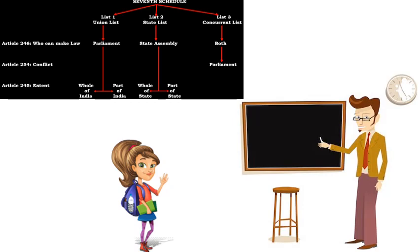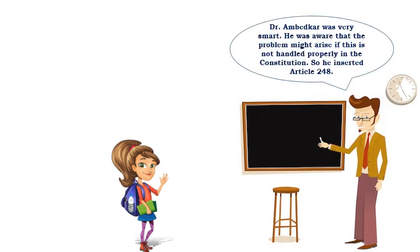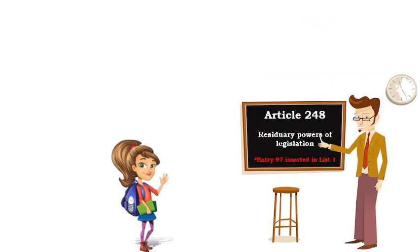You truly imbibed it. Thank you sir. Nora, are you excited to know how so many new laws were made? Yes sir, super excited. Dr. Ambedkar was a very smart person. He was aware that problems might arise if this was not handled properly in the Constitution. So he inserted Article 248. As per Article 248 and entry number 97 in the Union List of the 7th Schedule, Parliament has exclusive power to make any law with respect to any matter not listed in the Concurrent List or State List. By inserting Article 248 and entry number 97, the problem of making future laws was solved.